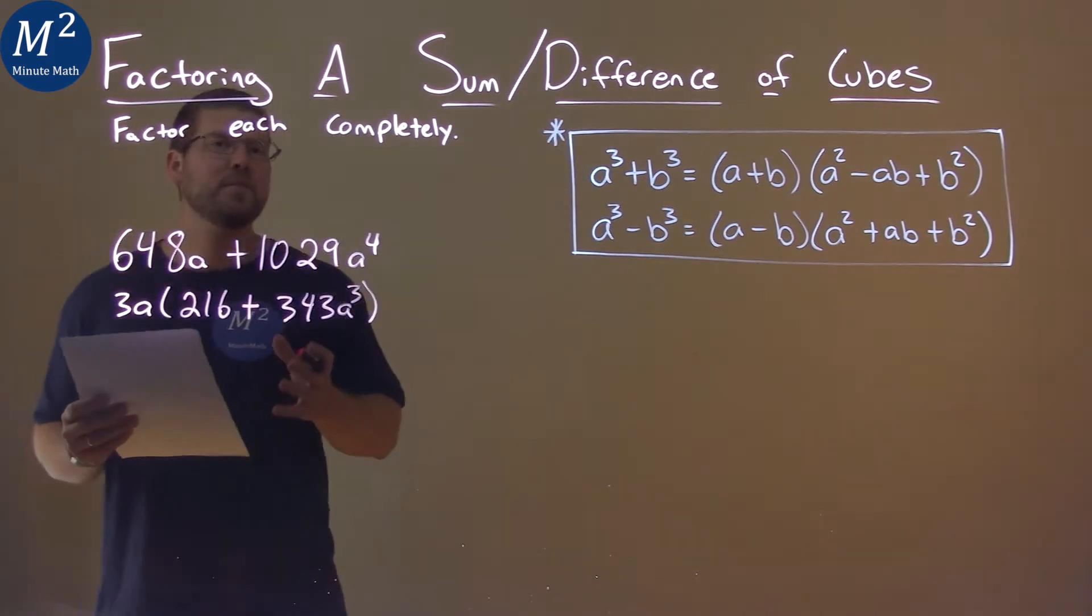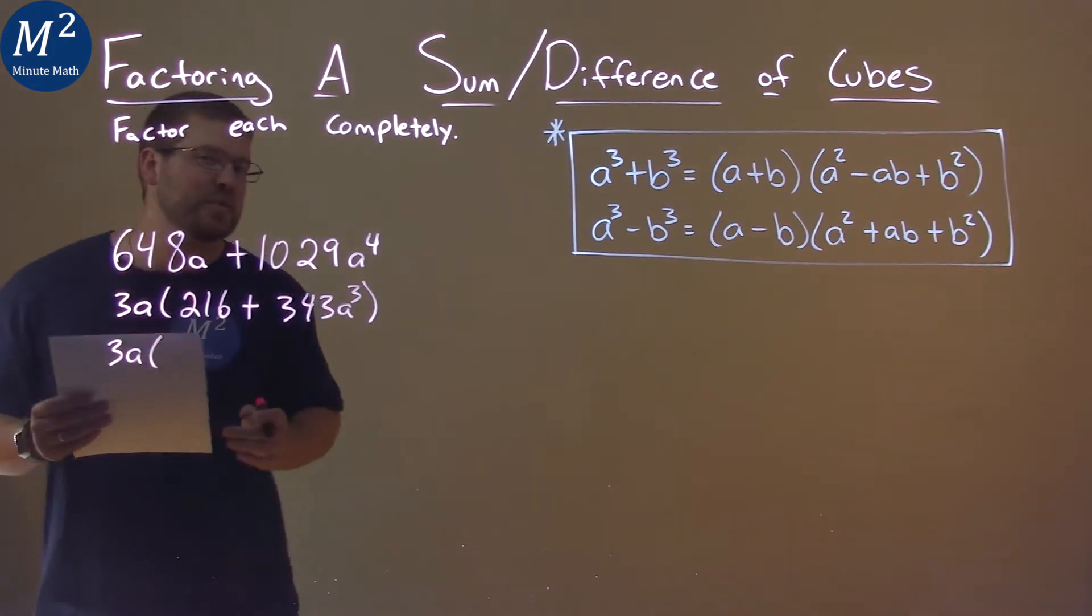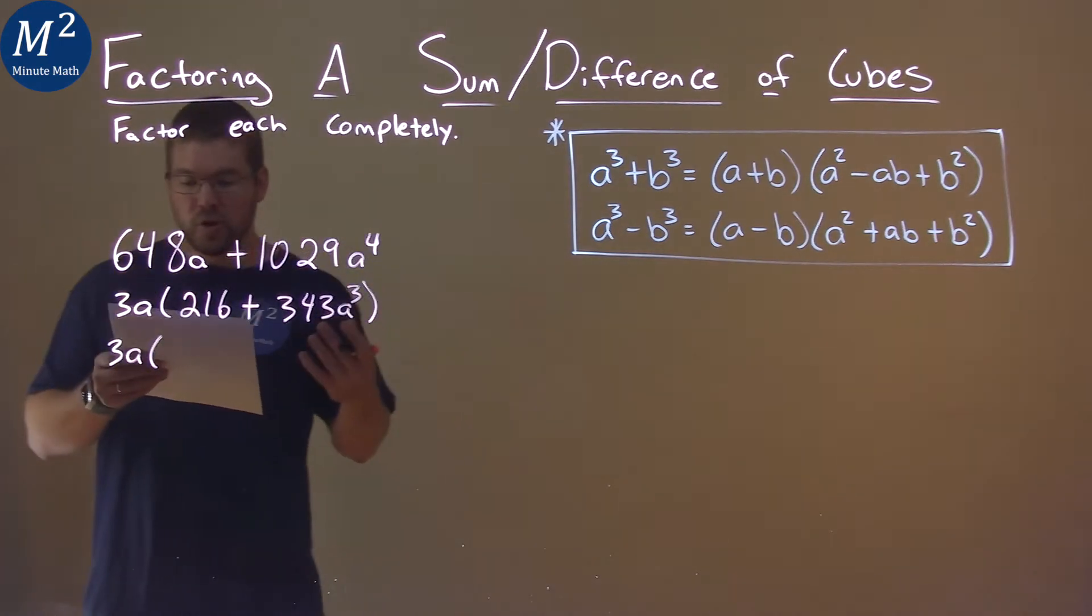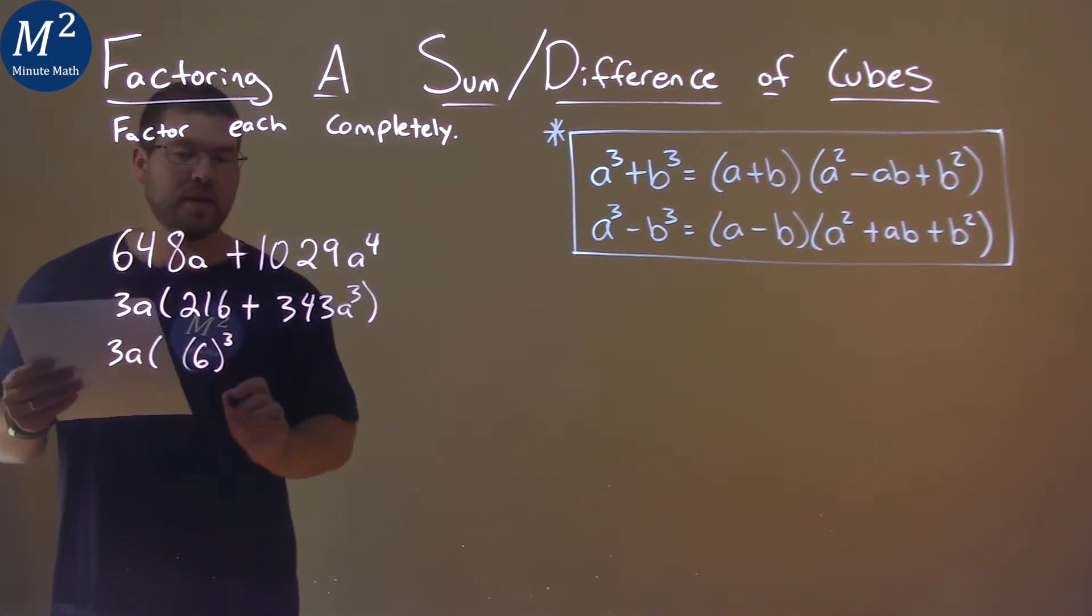Now we want to see if we can use the sum of cubes formula. 3a comes down. Can 216 be written as something cubed? That would be 6. 6 cubed is 216.